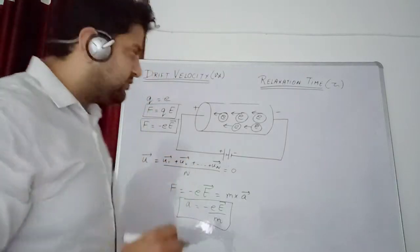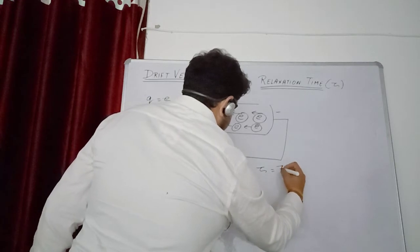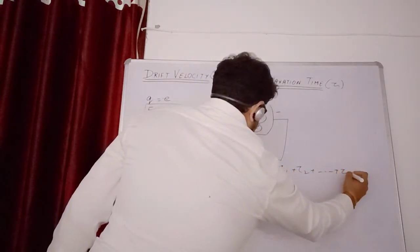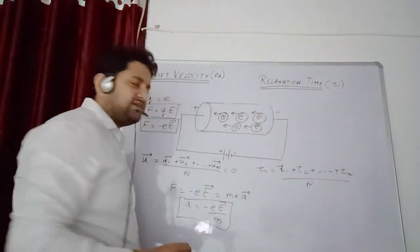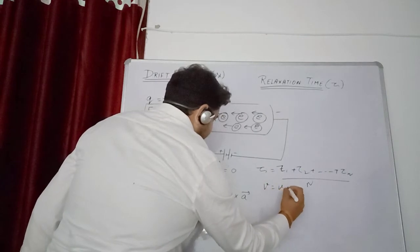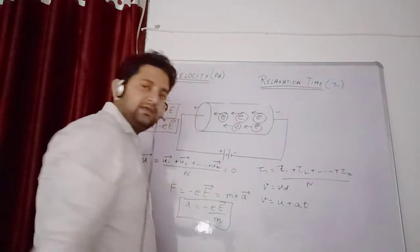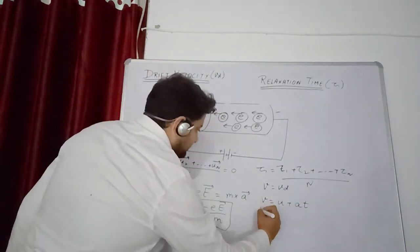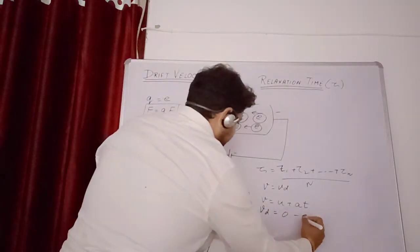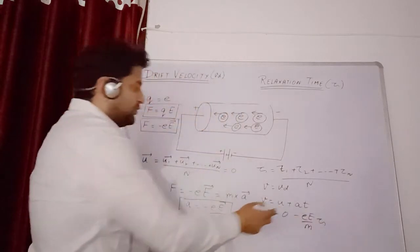If mass of electron is m and acceleration is a, then we get mass into acceleration vector. So acceleration value is minus e e vector upon m.